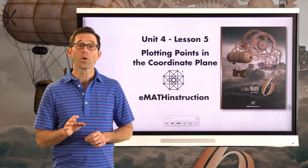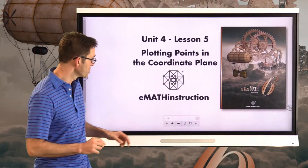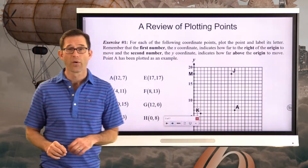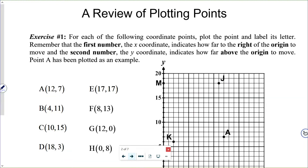Let's start by reviewing what you've already seen in terms of plotting points in earlier courses. For each of the following coordinate points, plot the point and label its letter. Remember that the first number, called the x-coordinate, indicates how far to the right of the origin to move, and the second number, the y-coordinate, indicates how far above the origin to move. Point A has been plotted as an example.